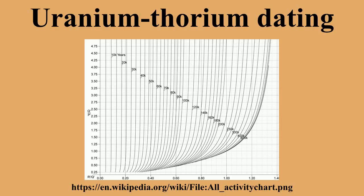Thorium is not soluble in natural waters under conditions found at or near the surface of the Earth, so materials grown from these waters do not usually contain thorium. In contrast, uranium is soluble to some extent in all natural waters, so any material that precipitates or is grown from such waters also contains trace uranium, typically at levels of between a few parts per billion and a few parts per million by weight.